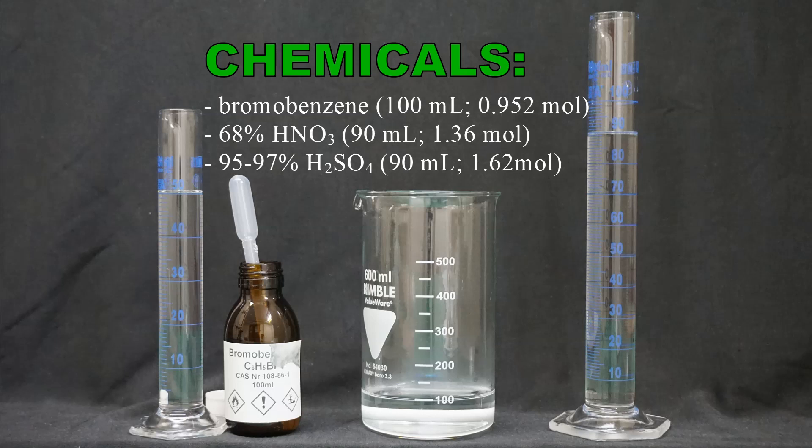The bromobenzene I bought online, but there are also two videos about the synthesis of bromobenzene on YouTube — the links are in the video description. The nitric acid I also bought online as 55% technical grade nitric acid and then distilled it to get the 68% azeotropic acid. It was sold as a professional fertilizer and was a discount purchase, but unfortunately the site I bought it from no longer sells it. The concentrated sulfuric acid I obtained locally a few years ago. These are all the chemicals I needed for the reaction, but for the workup I also used water and 96% ethanol.